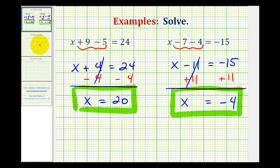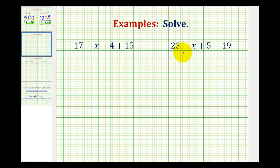Let's take a look at two more examples. Notice in these two equations, the variable is on the right side, but our process will be exactly the same. We want to isolate x on one side of the equation, but before we do that, we want to simplify each side. So looking at the first equation, we can simplify negative 4 plus 15. Well, negative 4 plus 15 would be positive 11. This will simplify to 17 equals x plus 11.